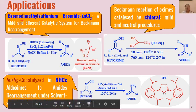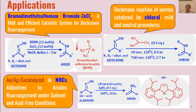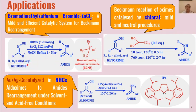A combination of bromodimethylsulfonium bromide (BDMS) and zinc chloride as co-catalyst can convert ketoximes into amides. When refluxed in acetonitrile for one to five hours — depending on the substrate type, where R or R1 may be alkyl or aryl — ketoximes are successfully converted into amides using this catalyst system.